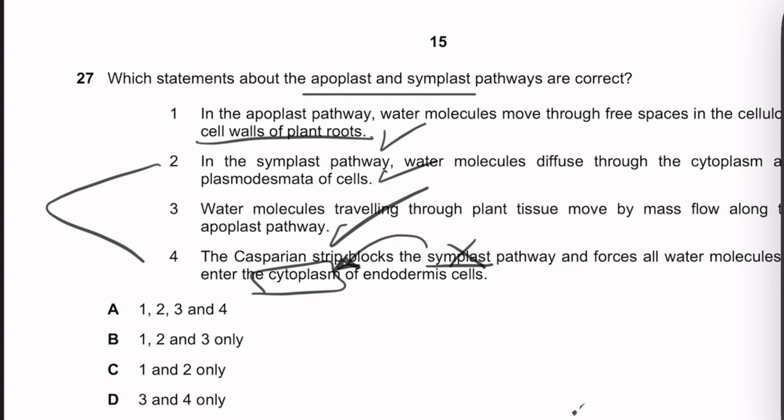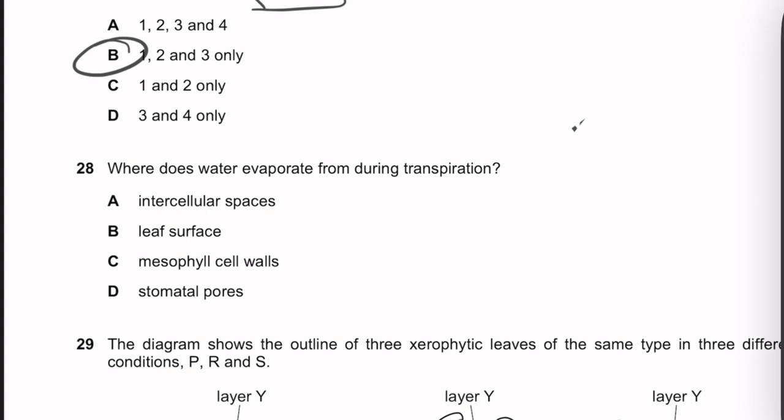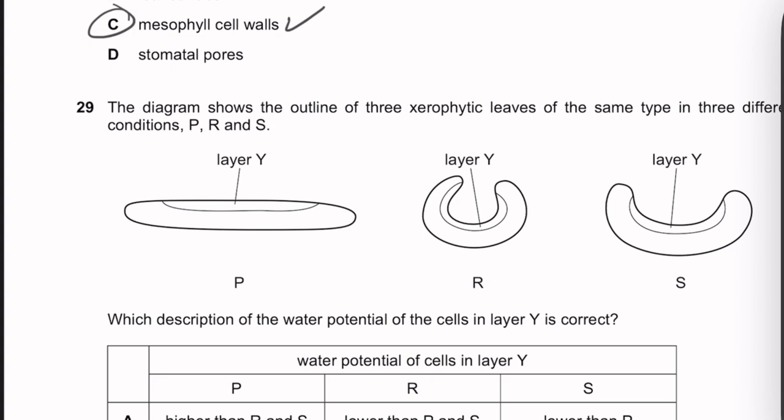Question 28: Where does water evaporate during transpiration? Water evaporates from the mesophyll cell walls into the intercellular air spaces inside the leaf, then diffuses out through stomata. Answer: mesophyll cell walls.